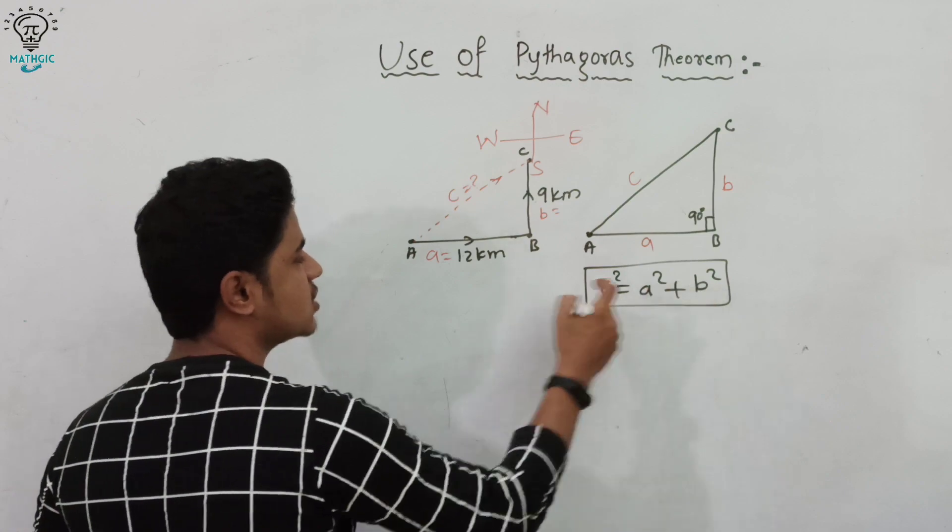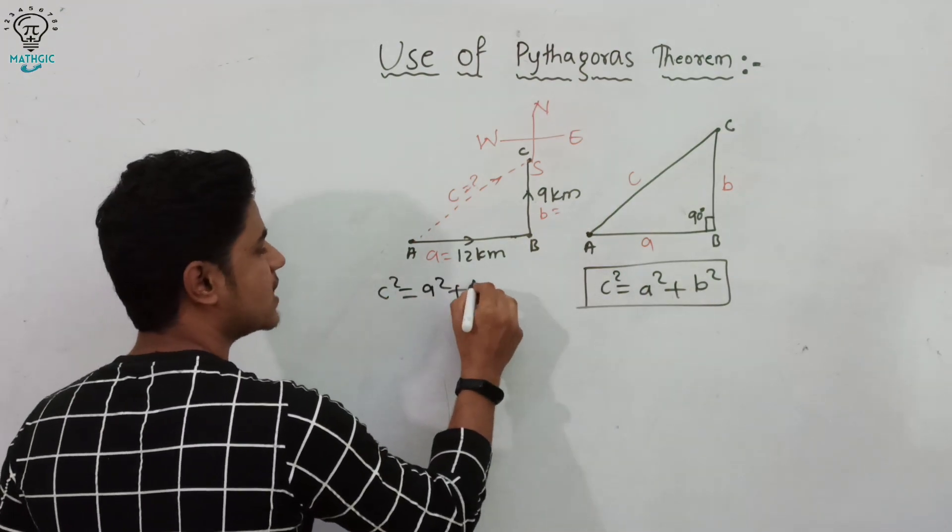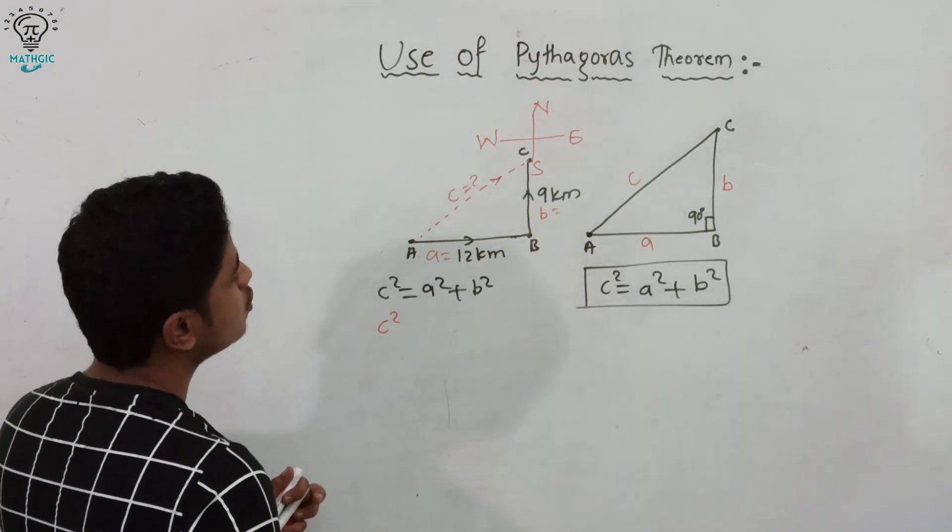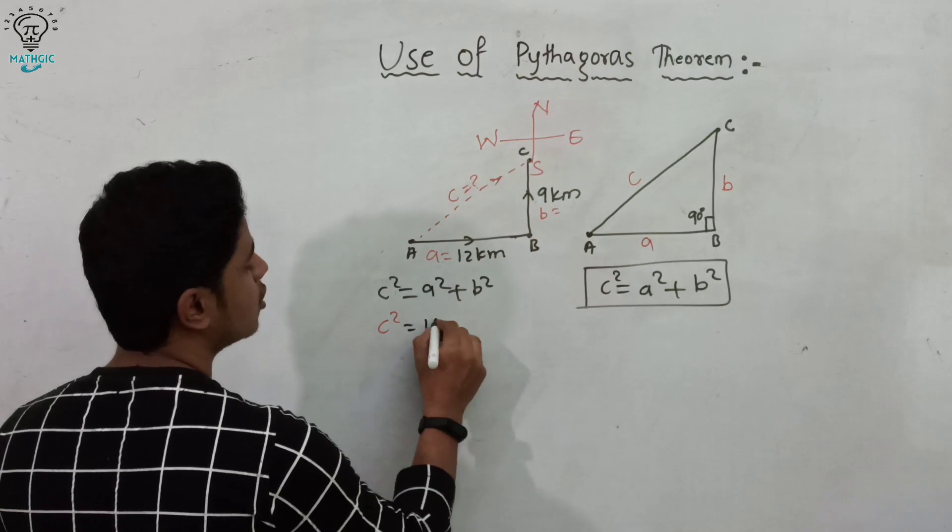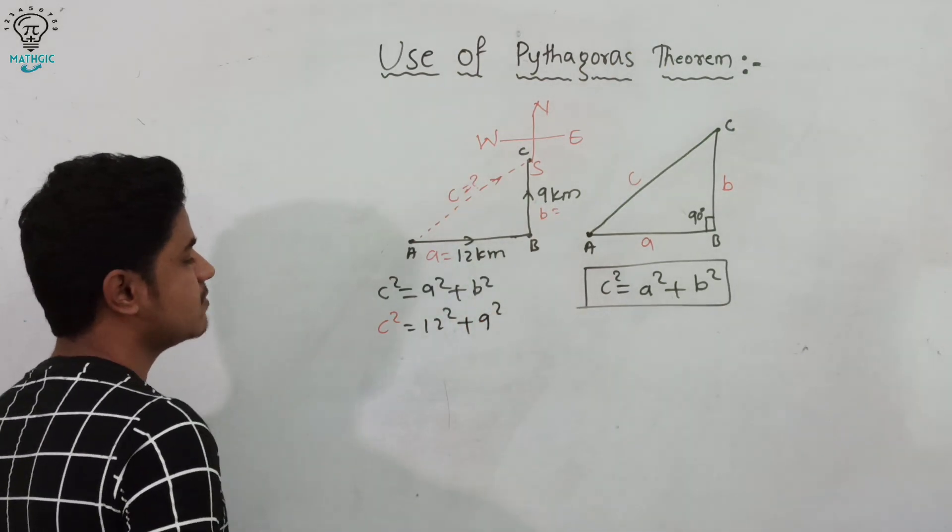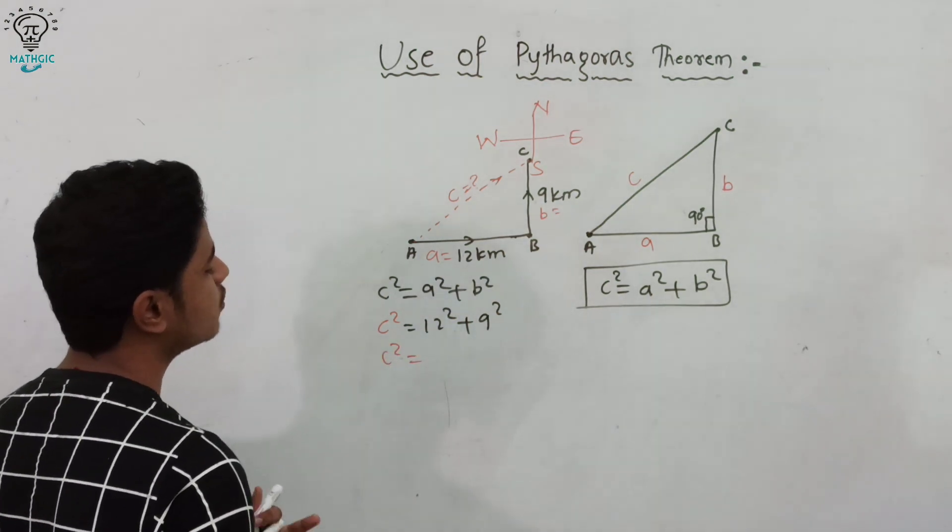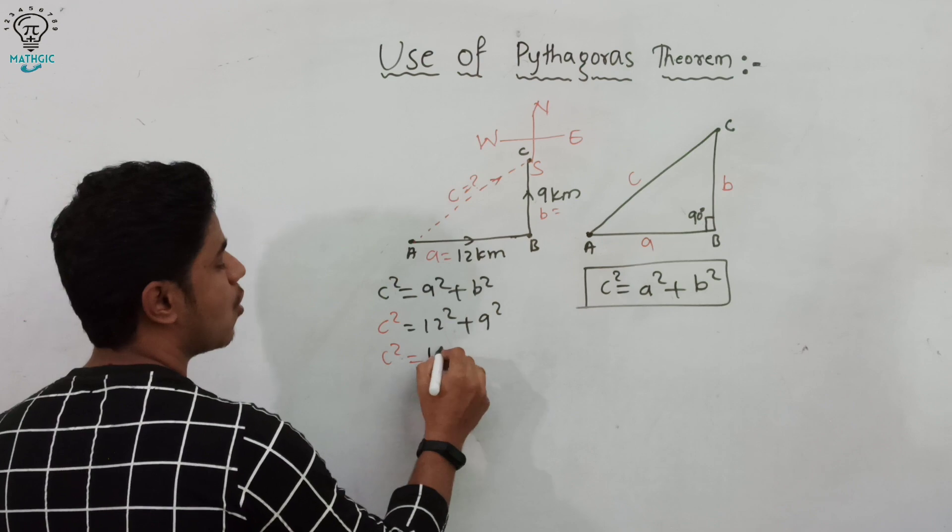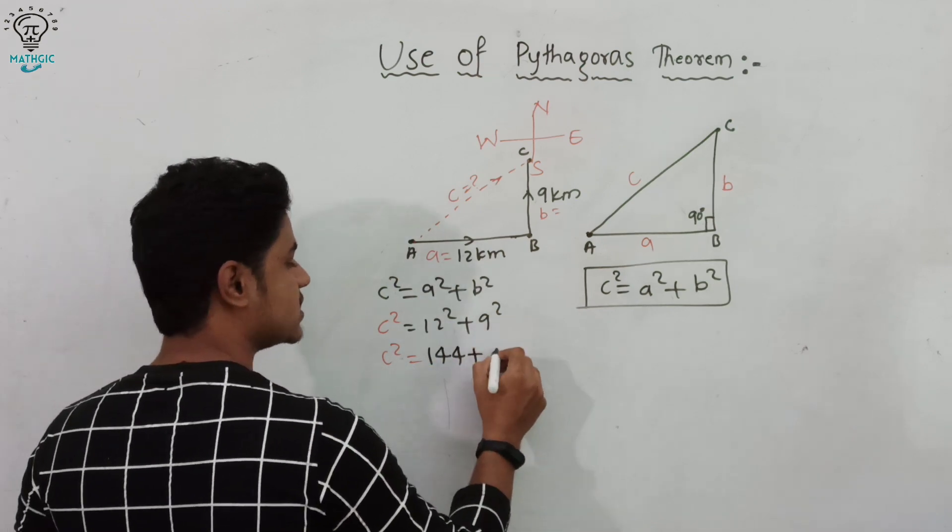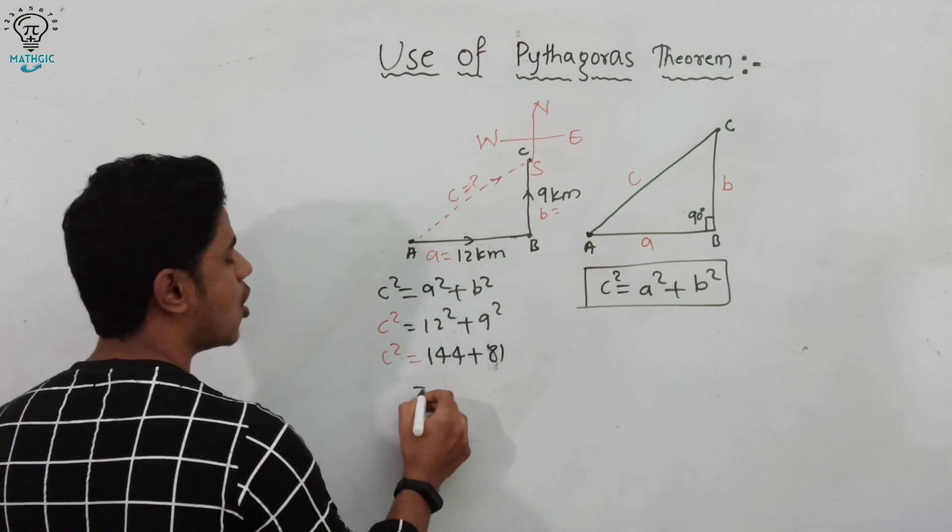We have to find c². Now a is 12, so 12² plus b is 9, so 9². Square means multiplication of same number to itself. c² = 12² is 12 times 12, 144, and 9² is 9 times 9, 81.